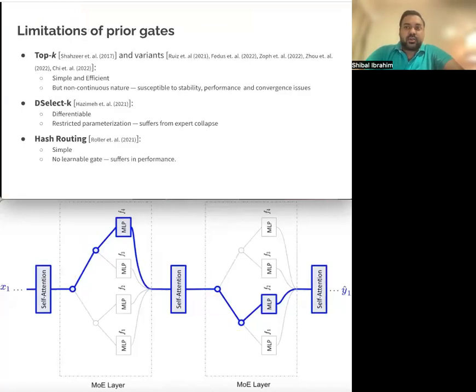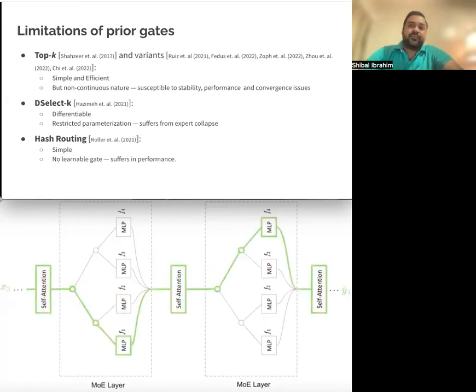A key component of sparse mixture of experts is the routing or gate module. There have been various methods in literature, for example, top-k and its variants. They are simple and efficient, but the non-continuous nature of top-k makes them susceptible to performance and convergence issues.